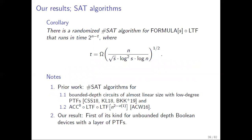One instantiation of the previous result is when using linear threshold functions at the leaves, and we have specific savings there. Previously in the literature, we were able to get subset algorithms for constant-depth Boolean devices with some finite number of layers of LTFs at the bottom. In our case, we have an unbounded depth formula on top — previously this was constant depth with one layer of LTFs. Also, result 1.1 is about bounded-depth circuits with low-degree PTFs.